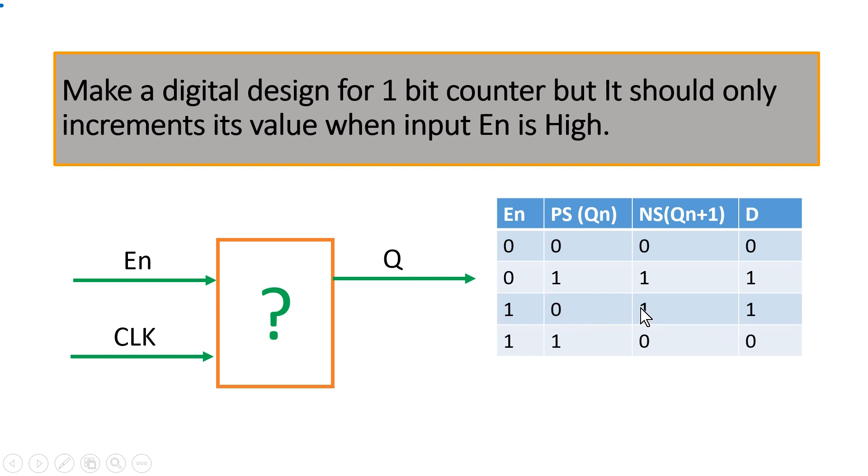Now when enable is 1 and the output value Q is 0 we know the next state should be 1. It should be inverted then only it will act as a one bit counter. So when enable is 1 output of this flip-flop is 1 that means Q is 1 the next state will be 0. Now if I tell you that I want this as a next state what should I apply at the input of a D flip-flop. So obviously we should apply the same value 0, 1, 1 and 0.